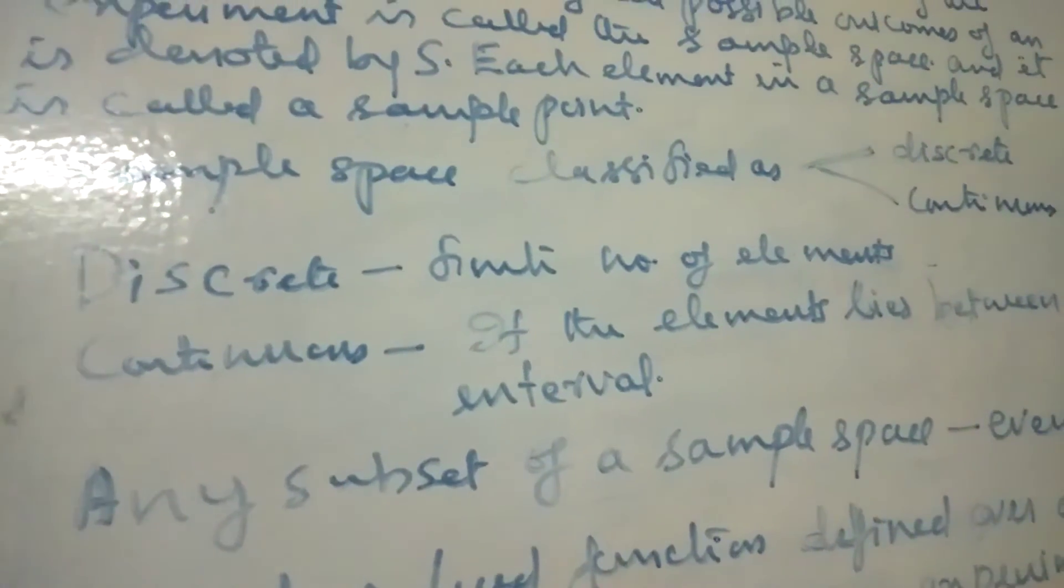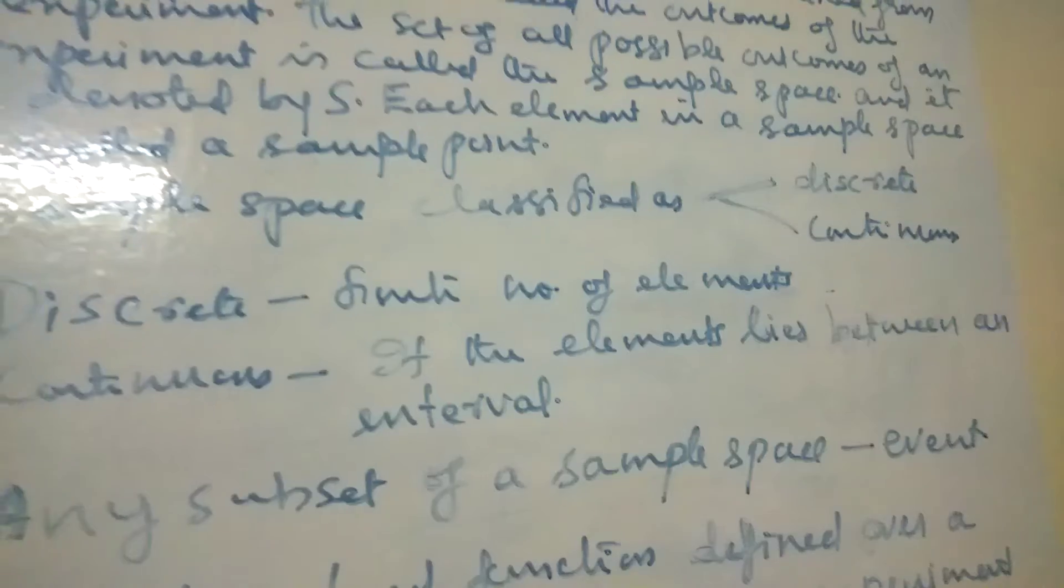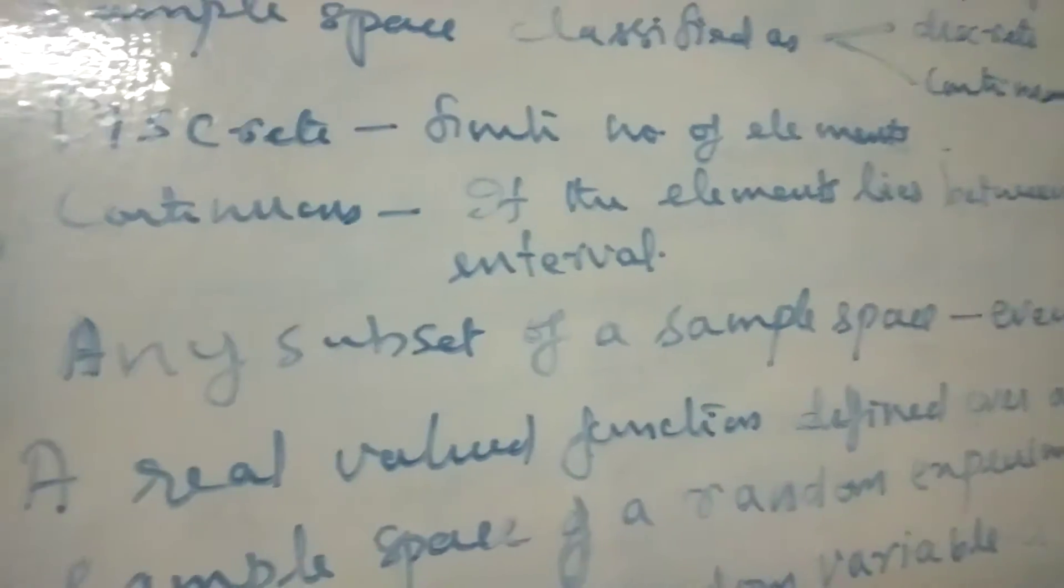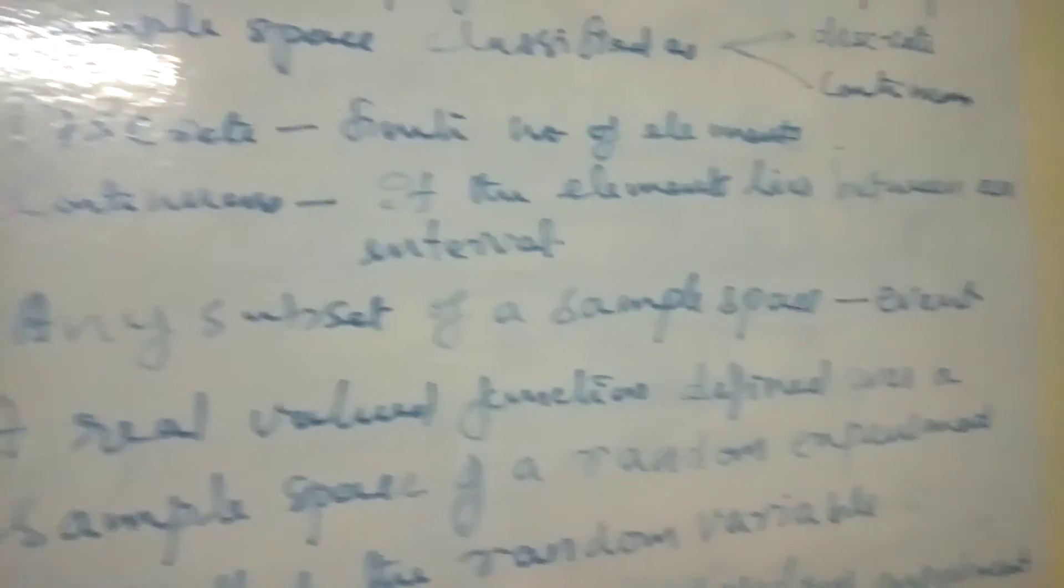And the continuous sample space is if the element lies between an interval, it is called a continuous sample space. Any subset of a sample space is called an event.